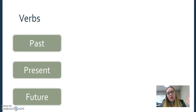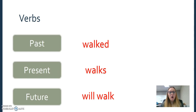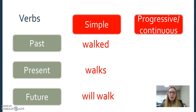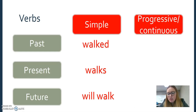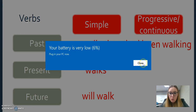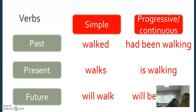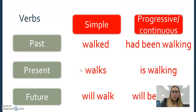Next, looking at verbs: we talk about verbs in terms of tenses, which is when something's happening. In simplest terms it's past, present, and future — walked, walks, will walk. You also need to know about progressive verbs, also referred to as continuous verbs, which show that something is in progress. Yesterday we were walking; in the present, I am walking or she is walking; in the future, we will be walking. For example, my computer was running out of battery, so I had to get to a power outlet.